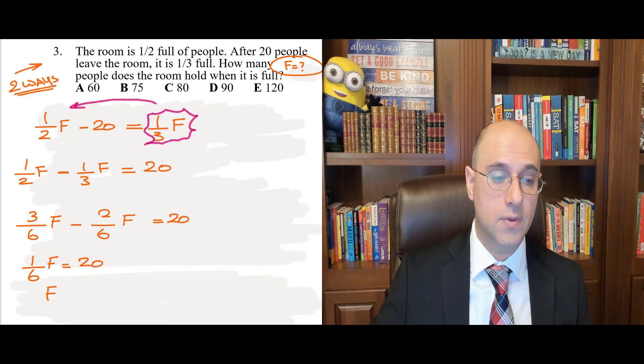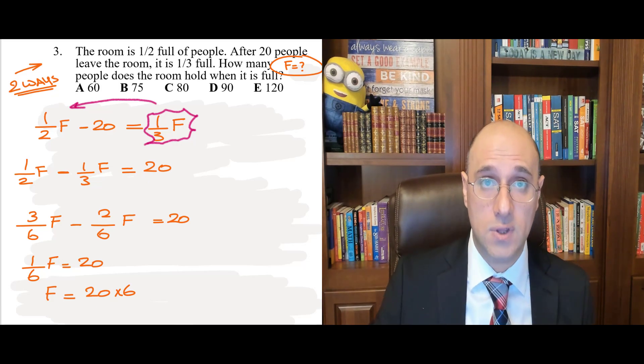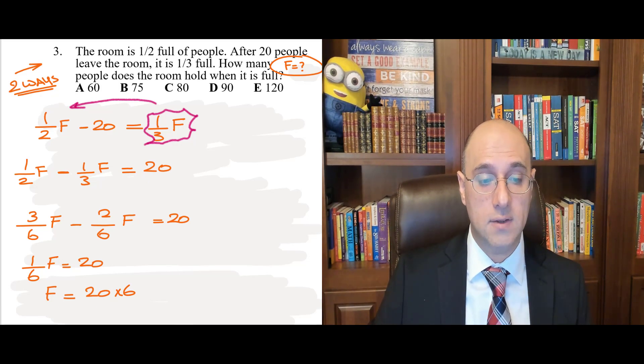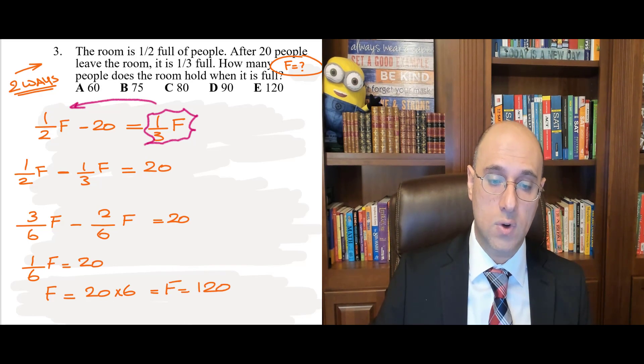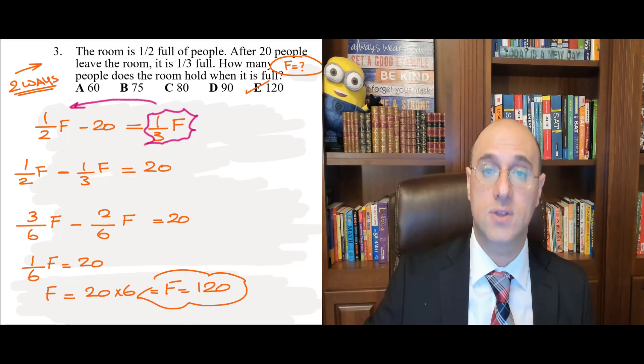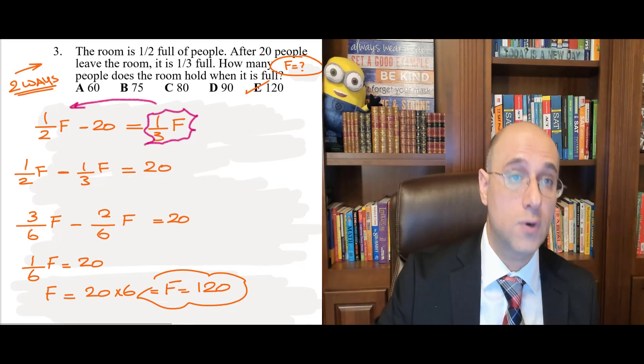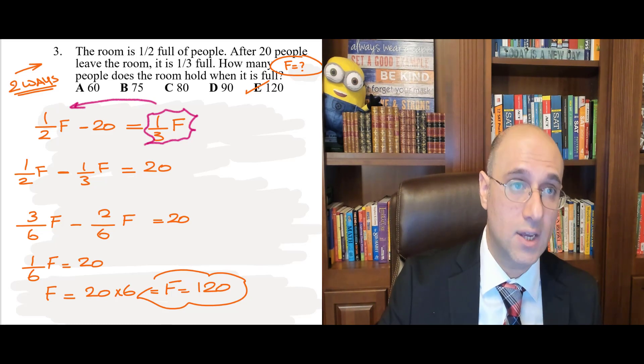How do we find F? We multiply 20 by six, right? Because it's one over six. So, the six goes to the other side as multiplied. F equals 20 times six. So, F equals 120 people. There you go. The answer is E. All right. So, this was the first way. How about the second way?